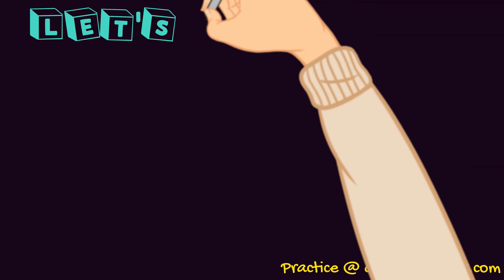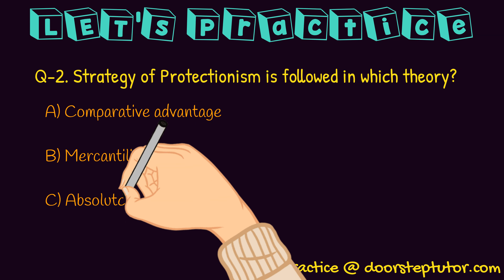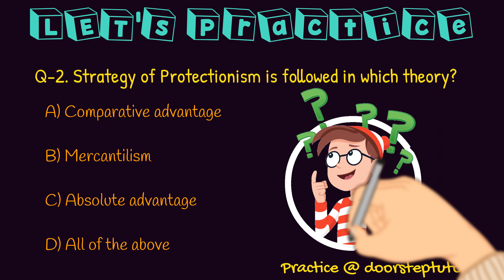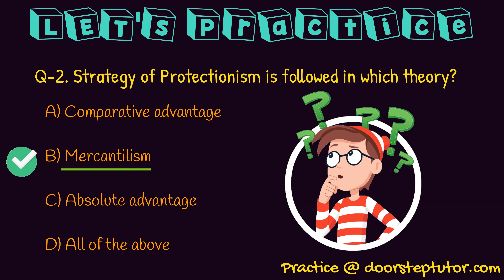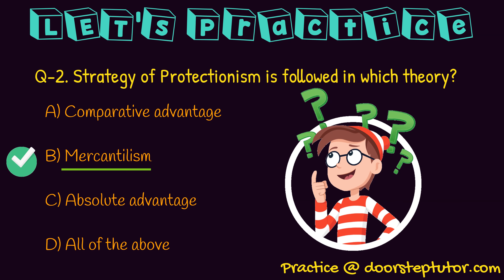The next question: a strategy of protectionism is followed in which theory? The options are: comparative advantage, mercantilism, absolute advantage, or all of the above. We discussed that mercantilism, prominent in the 1500s, focused on gathering as much gold and precious metal reserves as possible through exports, while restricting imports. This policy is basically known as protectionism, and it was followed during the period of mercantilism.